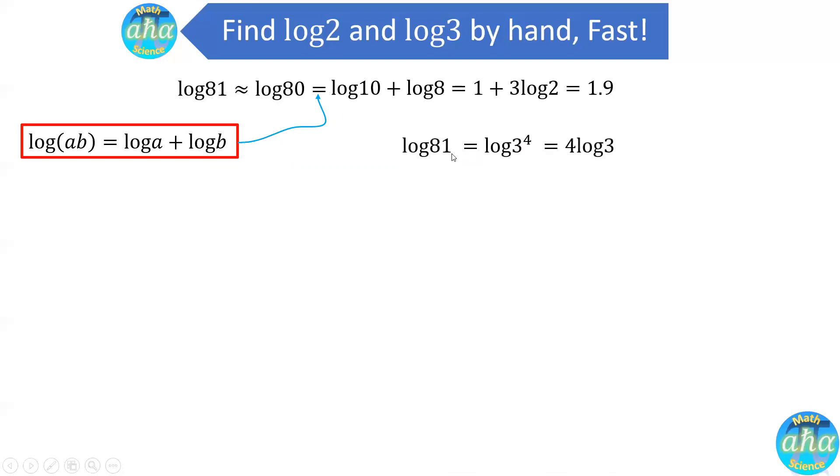And then we also know log of 81 is log of 3 to the power of 4, because 81 is 3 to the power of 4. We can bring this exponent 4 to the front and write it as 4 times log of 3. Now we can equalize these two. And this is what we have. 4 times log of 3 is 1.9. And log of 3 therefore is equal to 1.9 over 4, which is equal to 0.475.